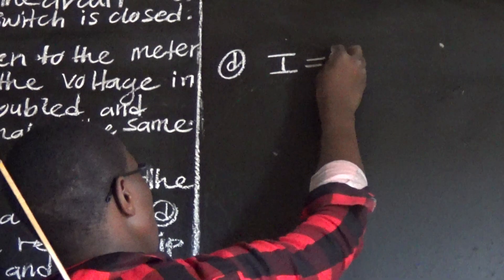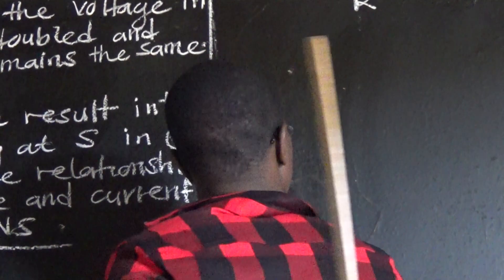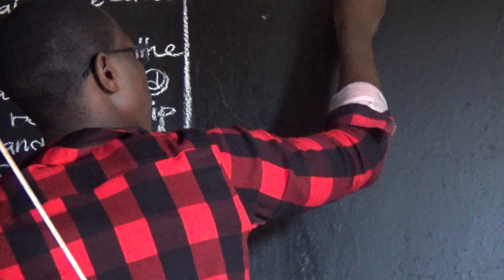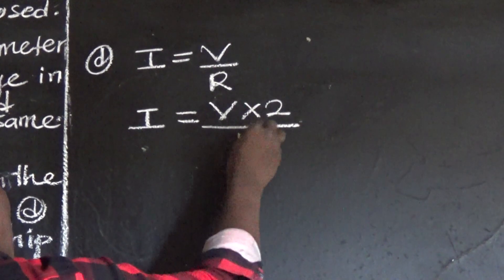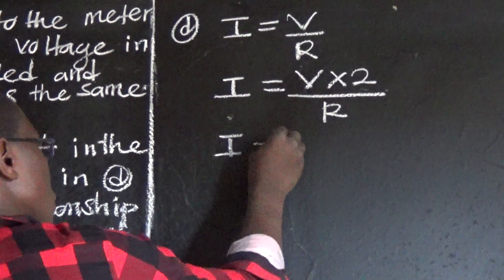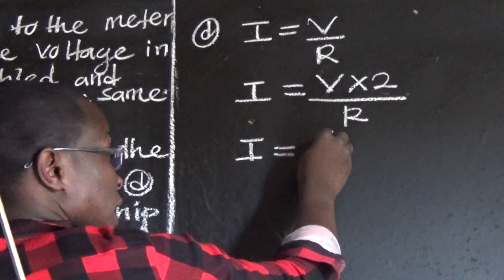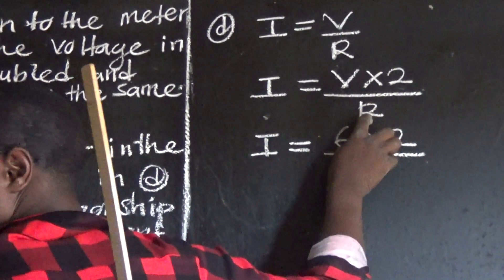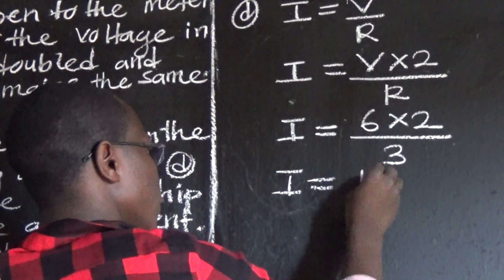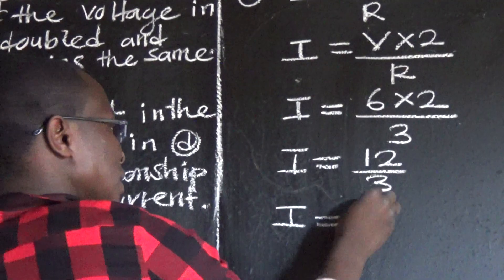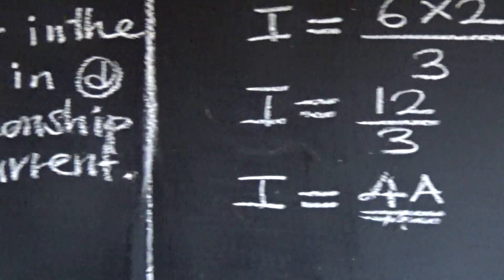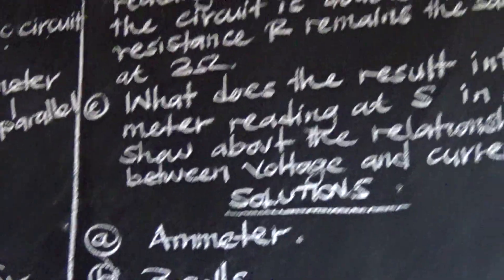Current equals voltage over resistance. They are saying: what would be the current if the voltage is doubled? So current equals 6 times 2 over the resistance. Current equals 12 over 3, which equals 4 amperes. So the rating of instrument S will be 4 amperes.